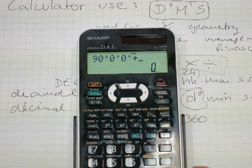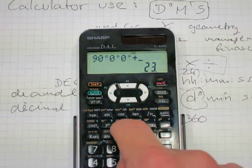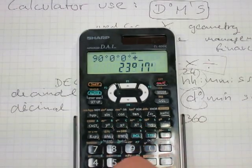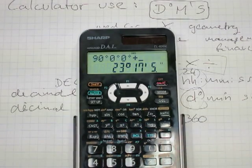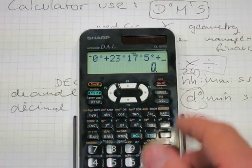For example, in a triangle you have one 90-degree corner—that's 90 DMS—and another angle in the triangle, say 23 degrees, 17 minutes, and 5 seconds. You can add them together.